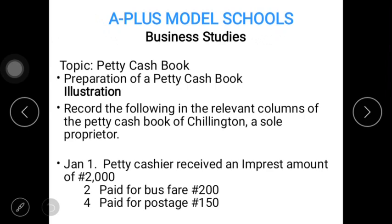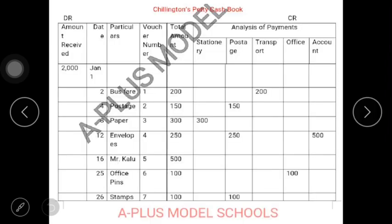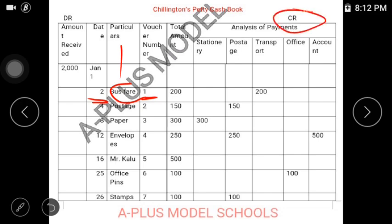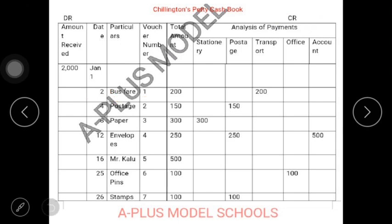January 2: paid for bus fare, 200. You have bus fare under your particulars, and that is the first voucher for that month. Because it is an expense, and every expense has to be on the debit side. That will be under your transport column as 200, and that is the only transaction that took place that day, so your total for that will be 200 as well.